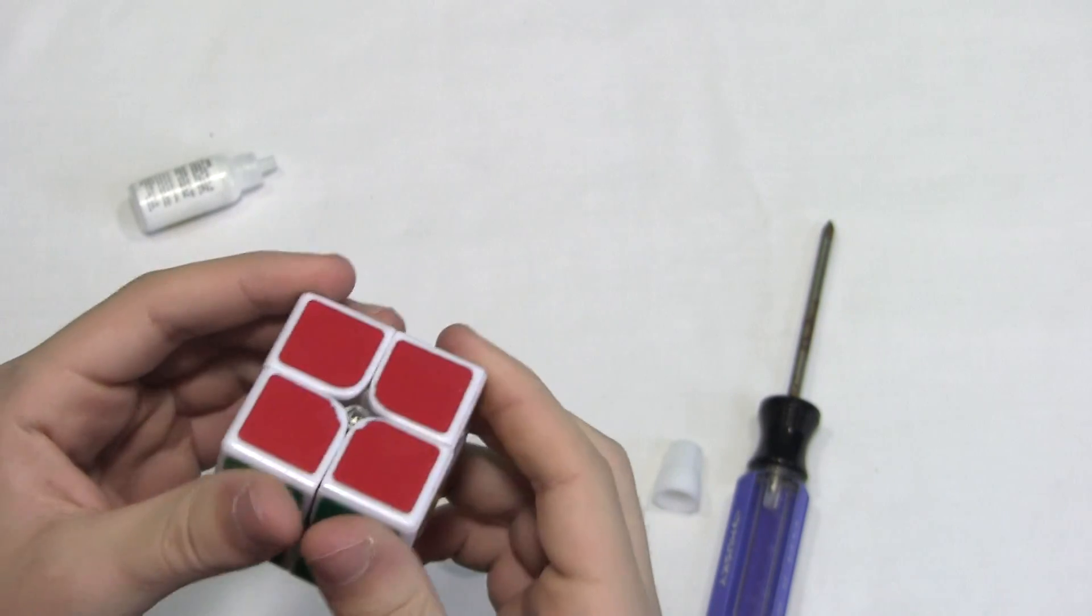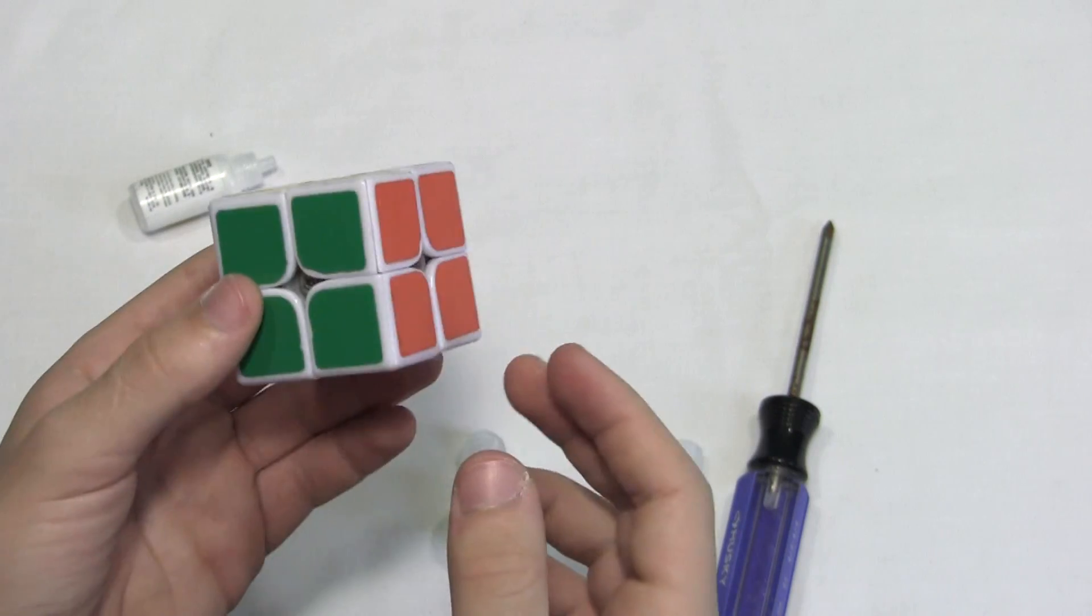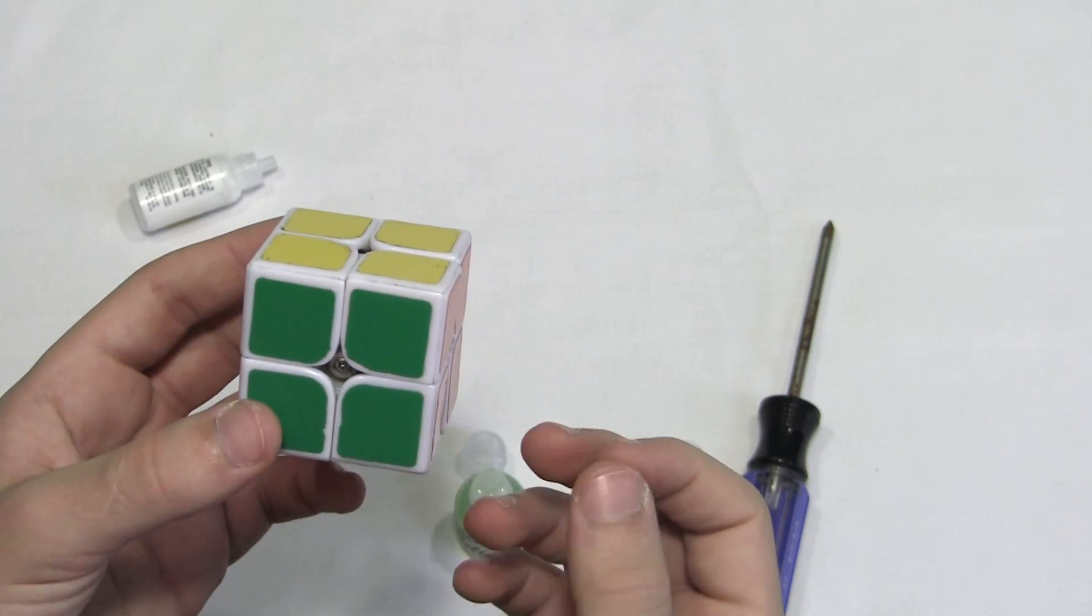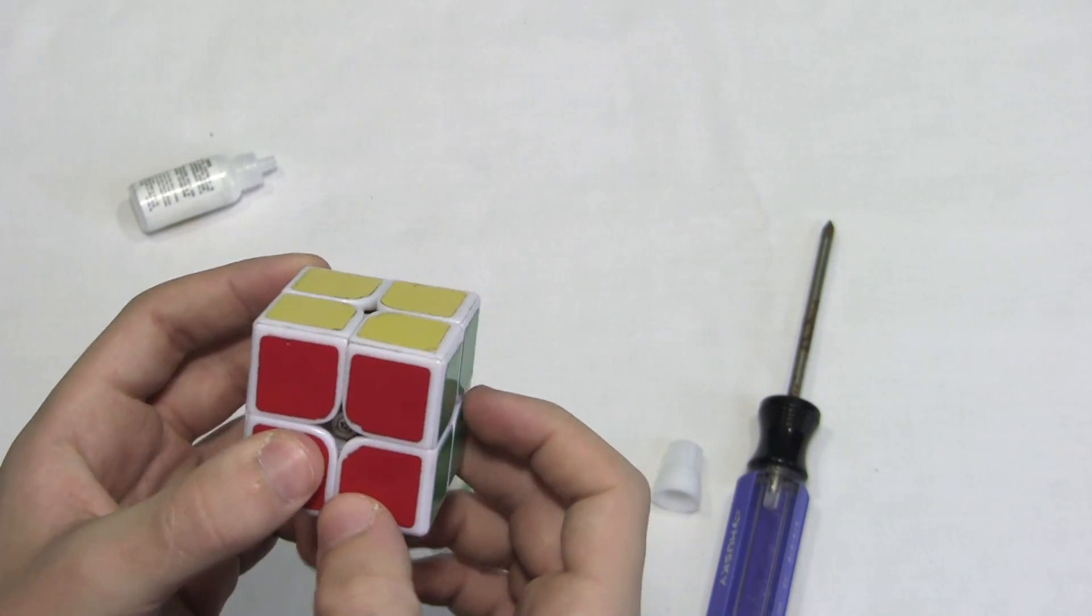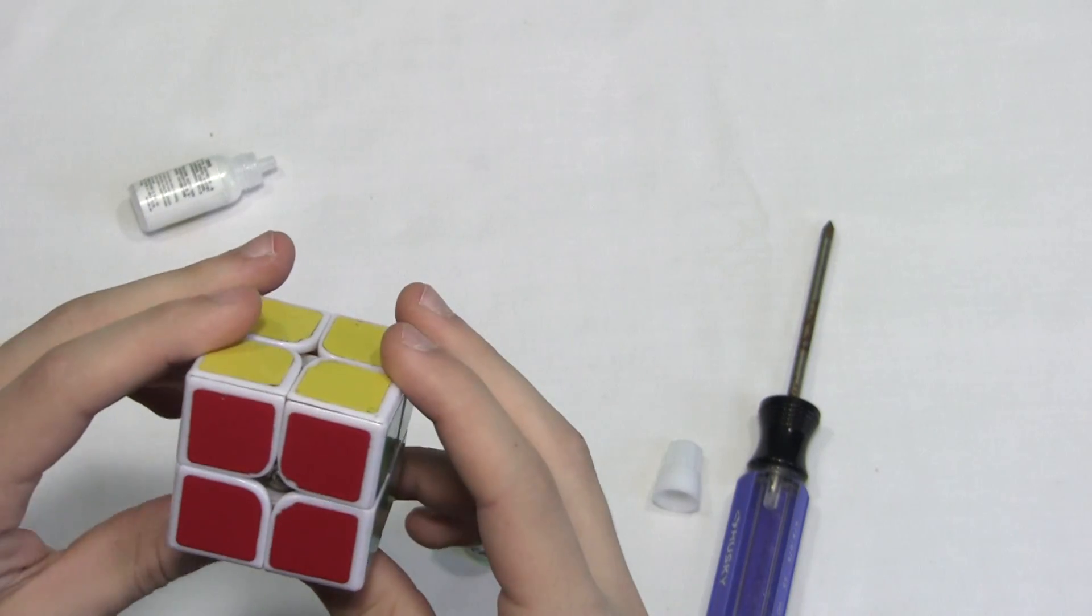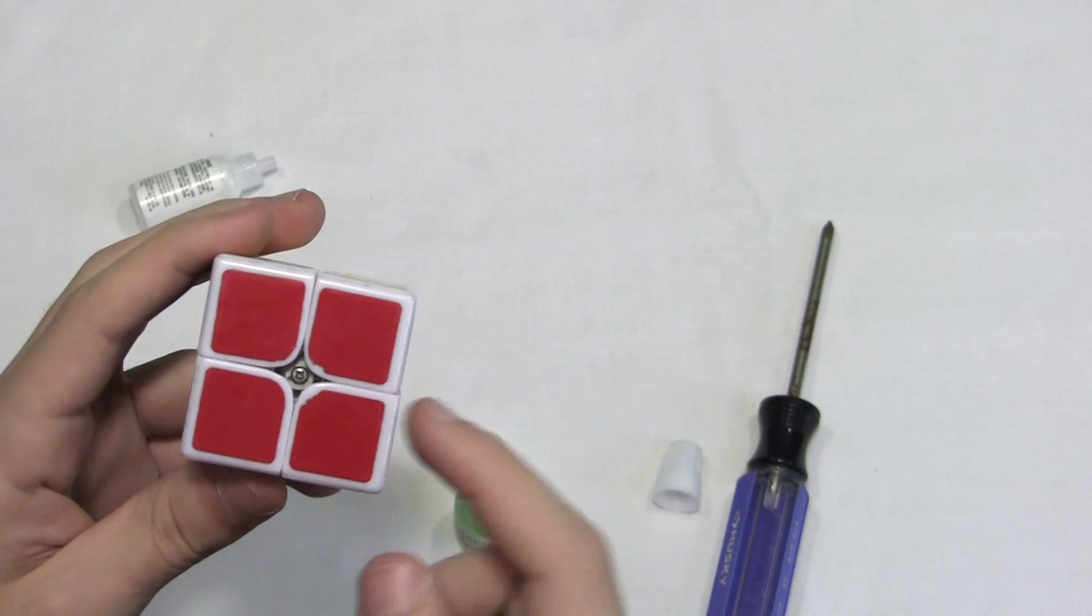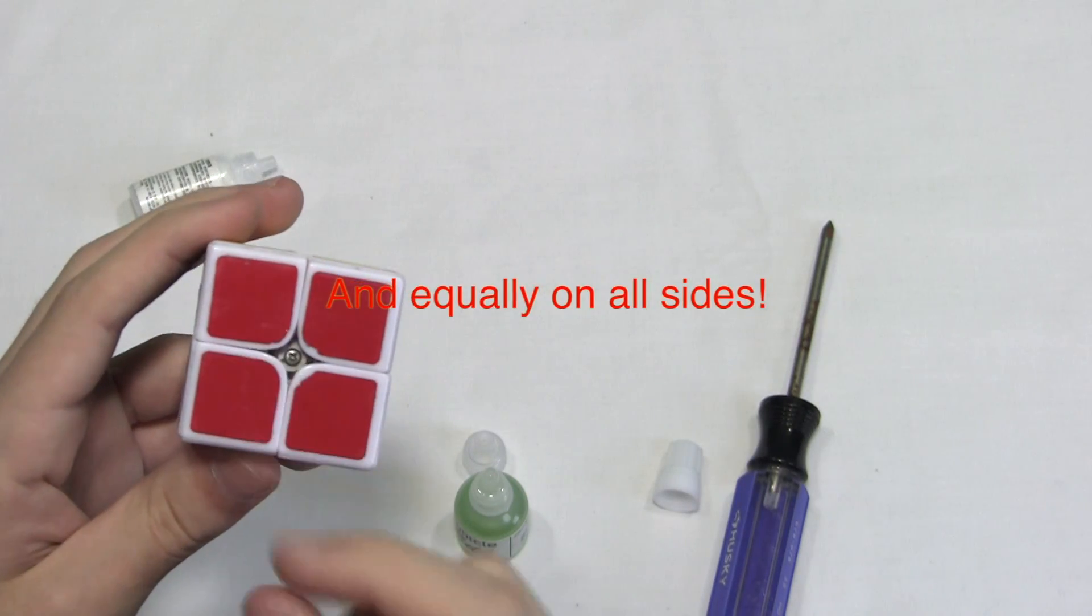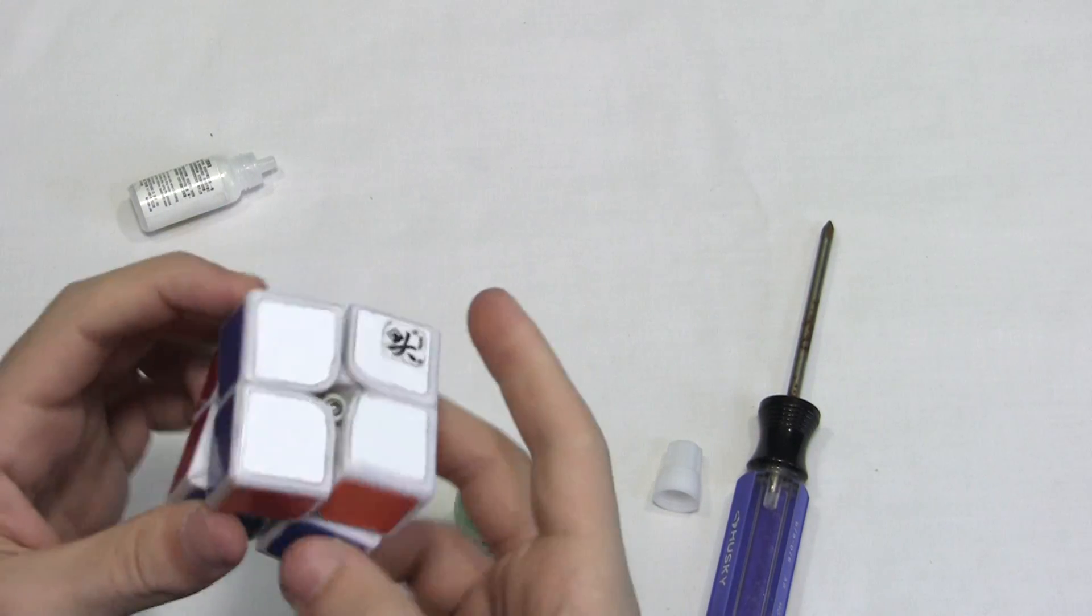So yeah, that's how to set up a 2x2 for beginners. I hope this helped. Wasn't that good, but this is for beginners. It's not meant to be advanced or anything. So look at someone else's video if you want a more advanced tutorial. But always make sure to tighten it or loosen it a little at a time.